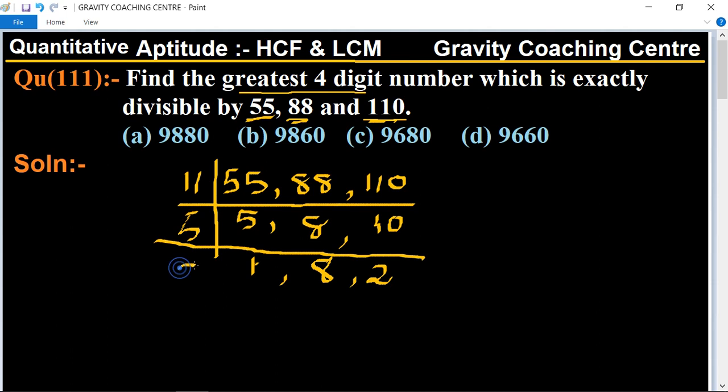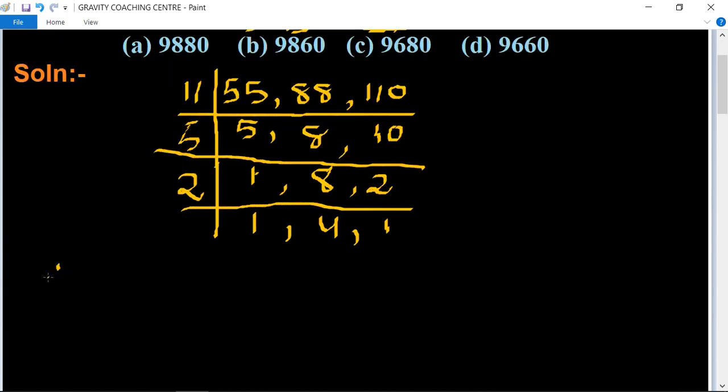And again table of 2 gives 1, 4, 1. Therefore LCM equals 11 times 5 times 2 times 4, and their product equals 440.